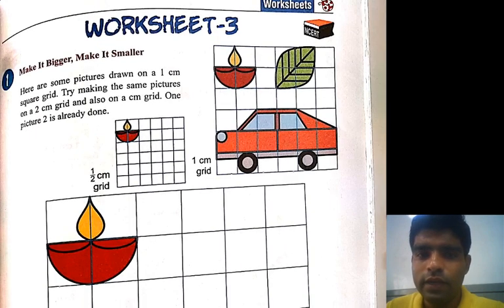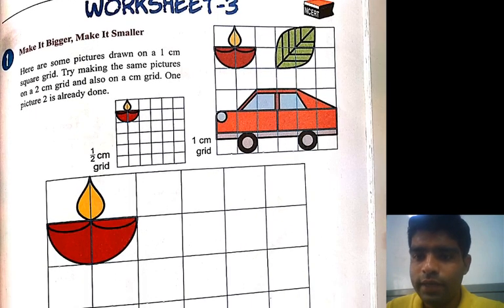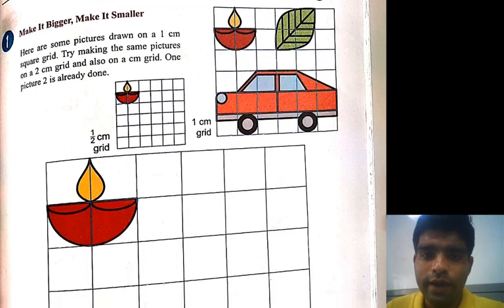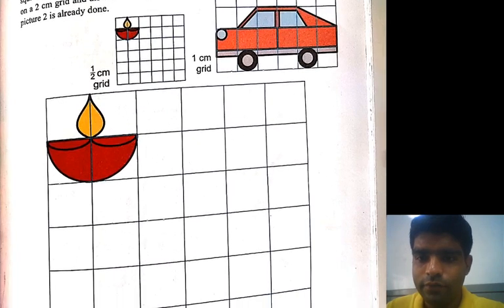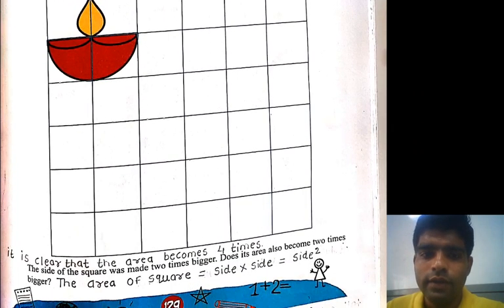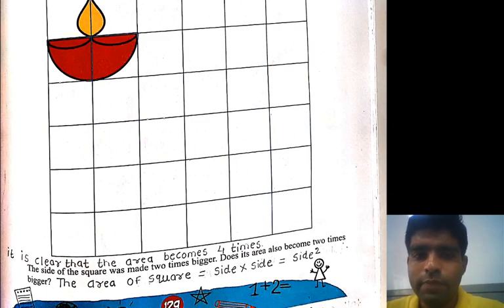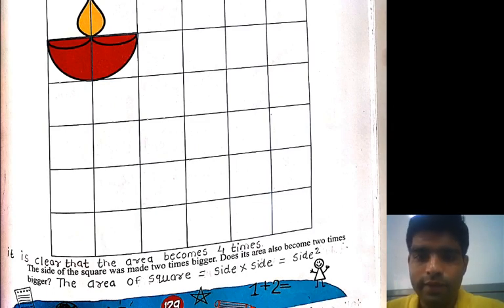The side of a square was made two times bigger.